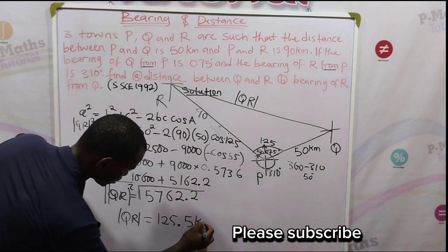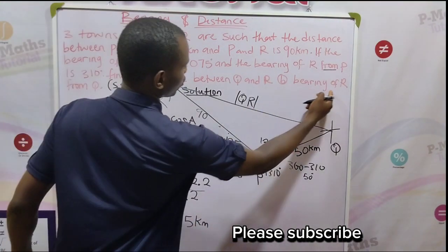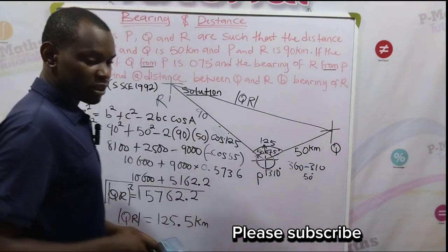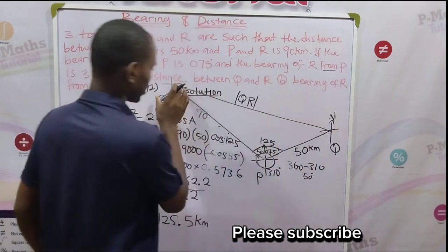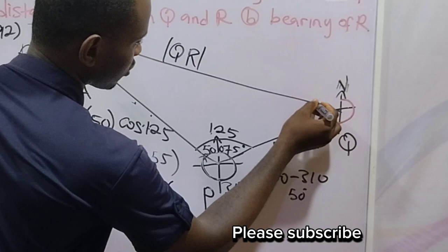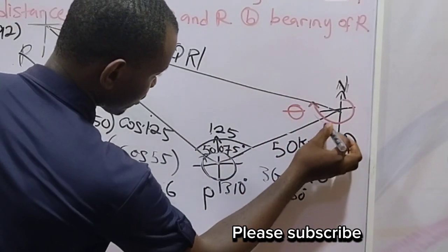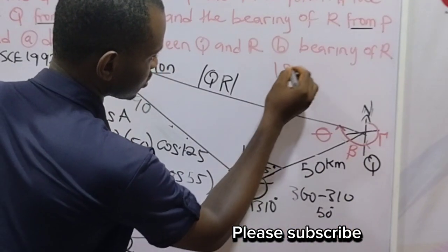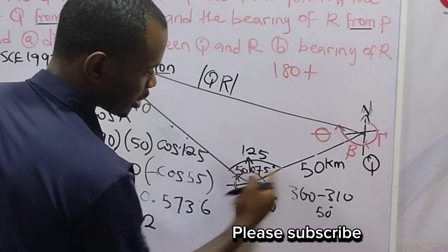Now the second part of the question says find the bearing of R from Q. So if somebody wants to go to R from Q, how will that person move? Remember that in bearing, every movement starts from the north pole. This is our north pole. Now if I want to go to R, I will start moving from this north pole. I will move around this way until I get to this line before I will move on this line to come to the position R. So the angle we are looking for is the total angle around this shape. So let's get the angle in here, get the angle here, and get the angle here. From here down to this point, that is 180 plus position of beta will be 75 because 75 is alternate to beta. So here is 75. 75 plus what is theta? So let's get our angle theta.